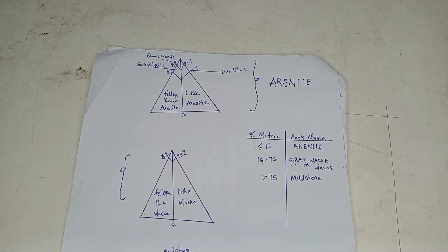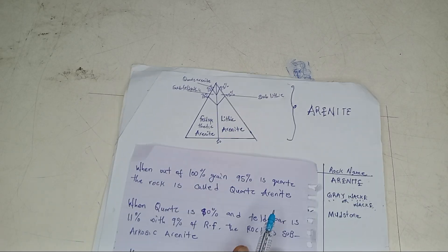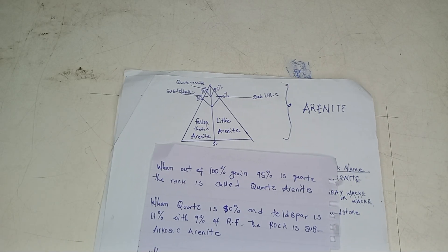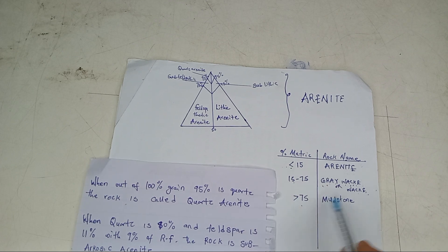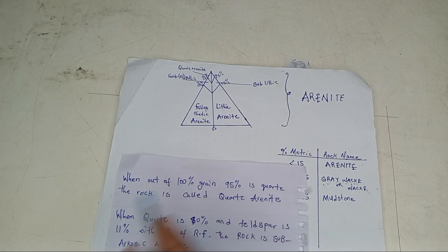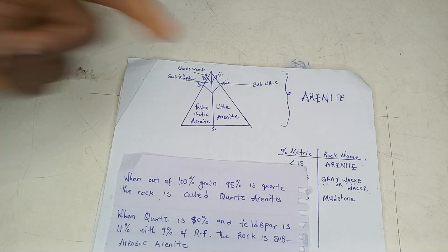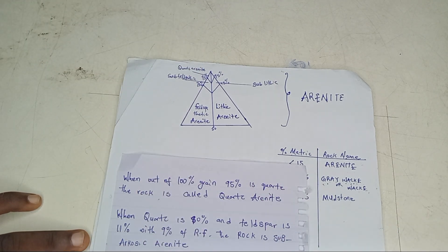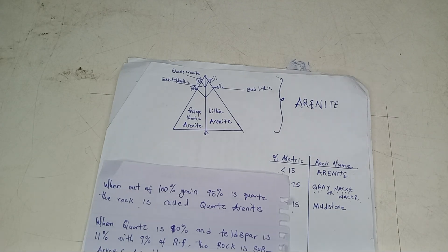Now we're going to start with the arenite — look at the first triangle. This is an arenite. For the sub-name: your parent's name is the rock name gotten by the matrix. Your own sub-name is what you get from the grains — the percentage of quartz, rock fragments, and feldspar. Each of these determines the sub-name. The sub-name is determined by the grains, while the parent's name is determined by the percentage of matrix.